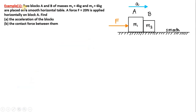The question is: two blocks A and B of masses M1 equal to 4 kg and M2 equal to 6 kg are placed on a smooth horizontal table. A force F equal to 20 N is applied horizontally on block A. Find the acceleration of the blocks and the contact force between them.